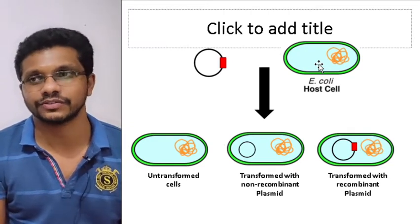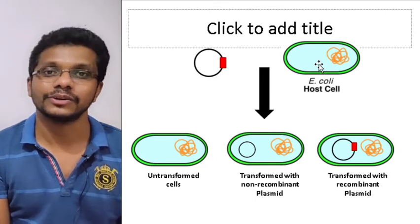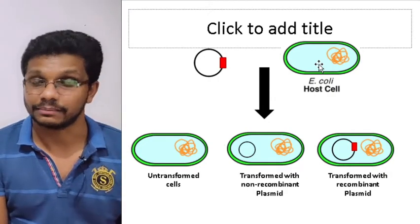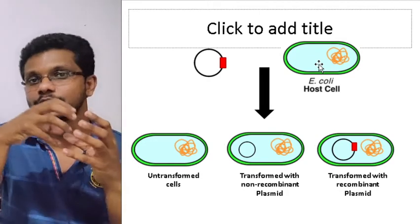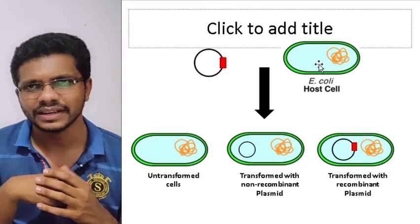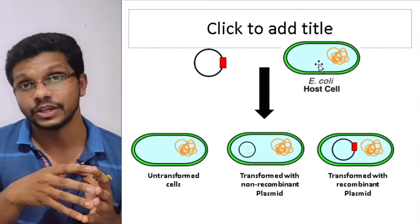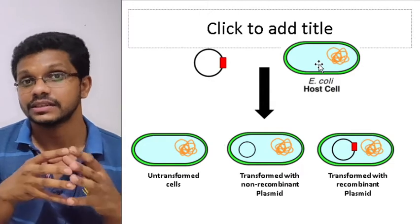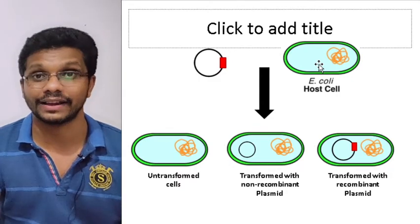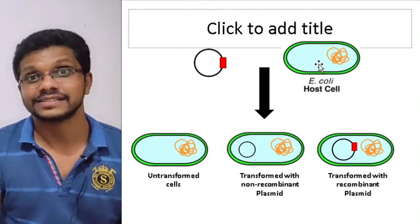If you add the restriction endonuclease to the vectors, not all vectors will be cut — some will escape or may have some modifications. So the restriction process is not complete. When we try to insert the foreign DNA into the vector, sometimes the plasmids re-circularize without the insert. The process of transformation — the transfer of DNA to the cell — has a very low frequency. In the case of E. coli, the maximum frequency reported in most studies is one in a thousand. If you take a thousand cells and do the transformation process the best way you can, only one out of a thousand will be transformed; the other 999 will remain untransformed.